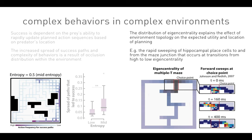The distribution of eigencentrality may explain the effect of environment topology on the expected utility and location of planning. I want to show this great data that David Redish collected over 10 years ago, where he showed forward sweeps at key junctions — which are transitions in eigencentrality. At the junction, he found forward sweeps as the animal did vicarious trial-and-error behavior right at that junction.